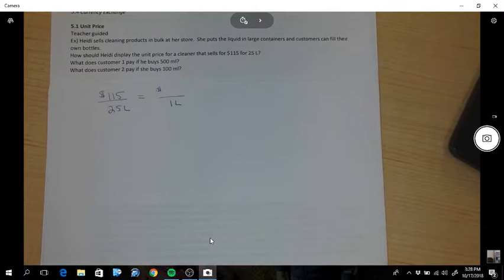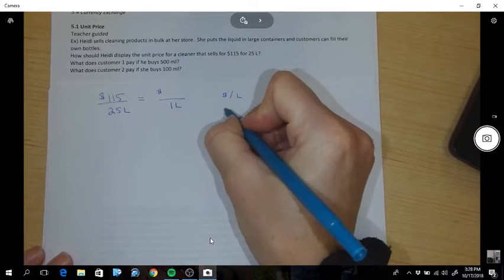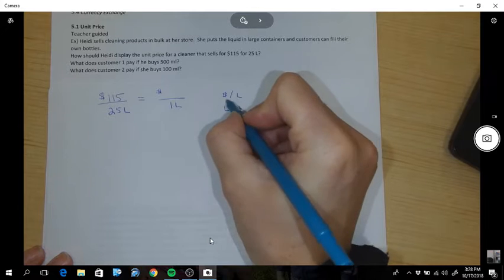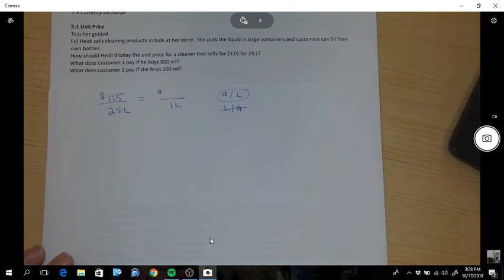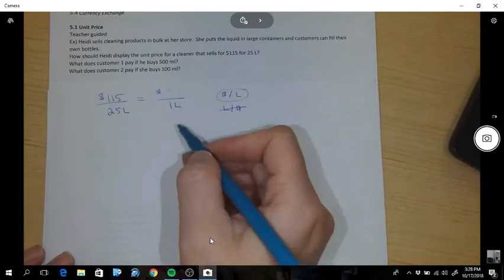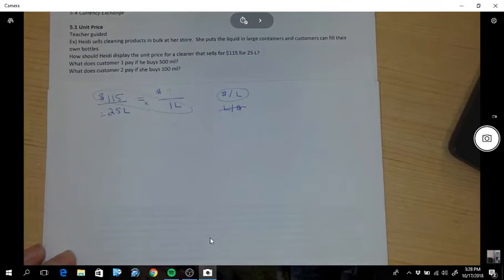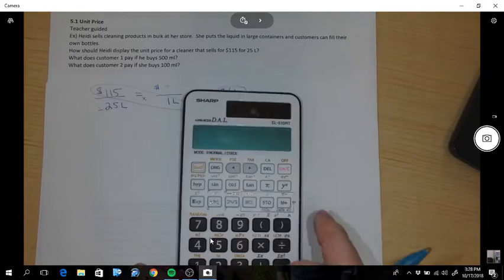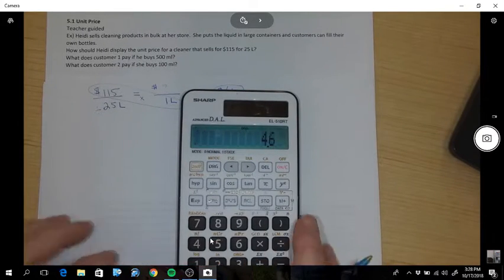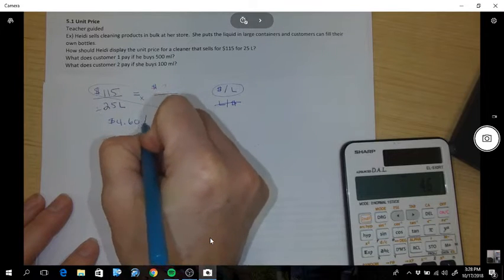Okay, and ask yourself what makes sense when you're doing unit pricing. Does it make sense to do dollar per liter or liter per dollar? When we sell stuff, it's usually the price per liter. So now that we've set this up, you multiply and divide. That's how you cross multiply. So $115 divided by 25 equals 4.6, which is $4.60 per liter.